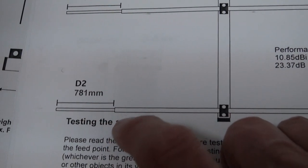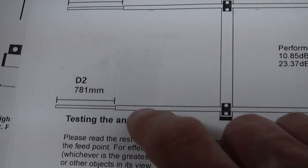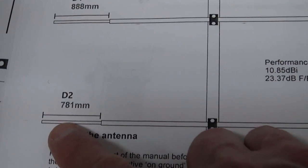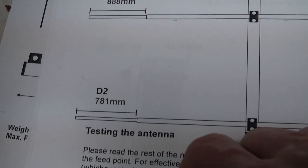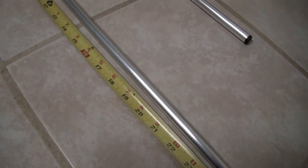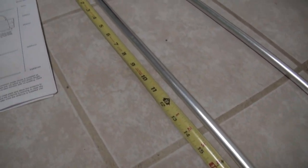For director two, the distance from the open end of the center section here to the end of the element should be 781 millimeters, or approximately 30 and 3 quarter inches. Complete this procedure on the opposite side, and director number two is complete.